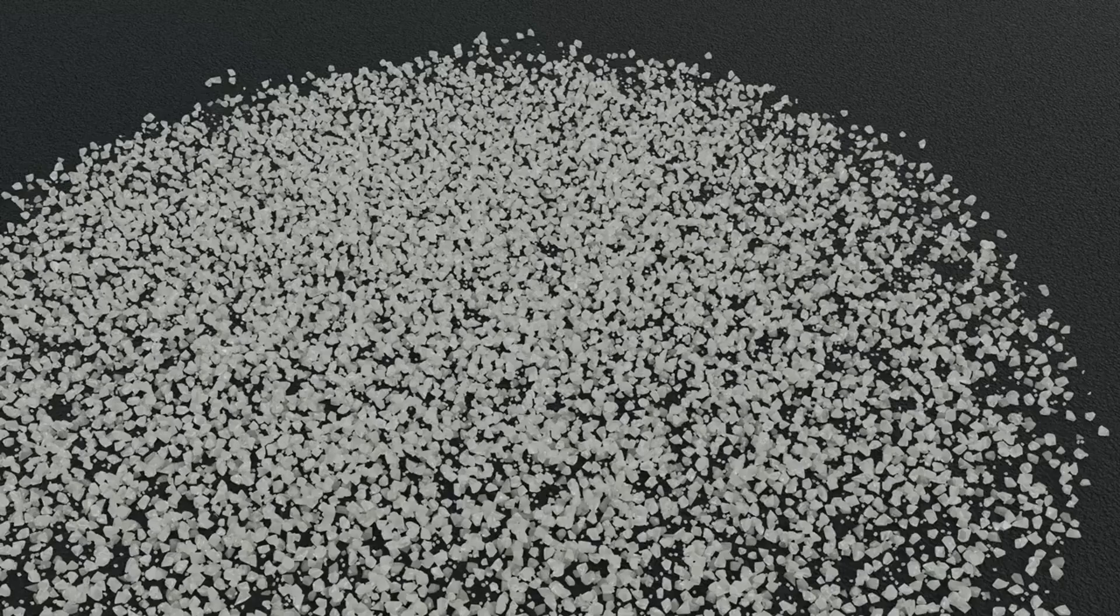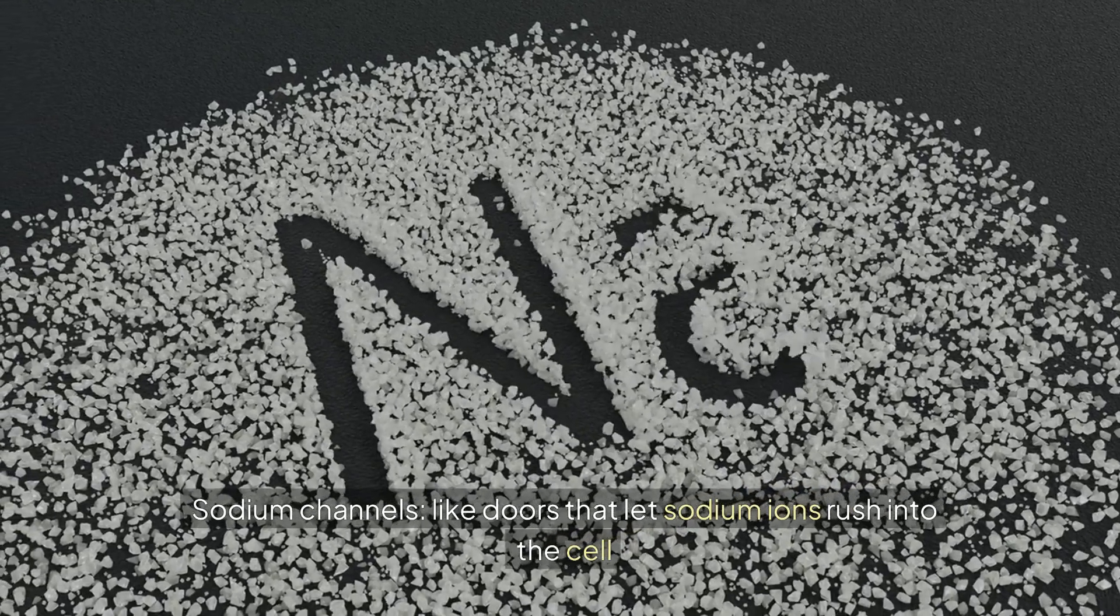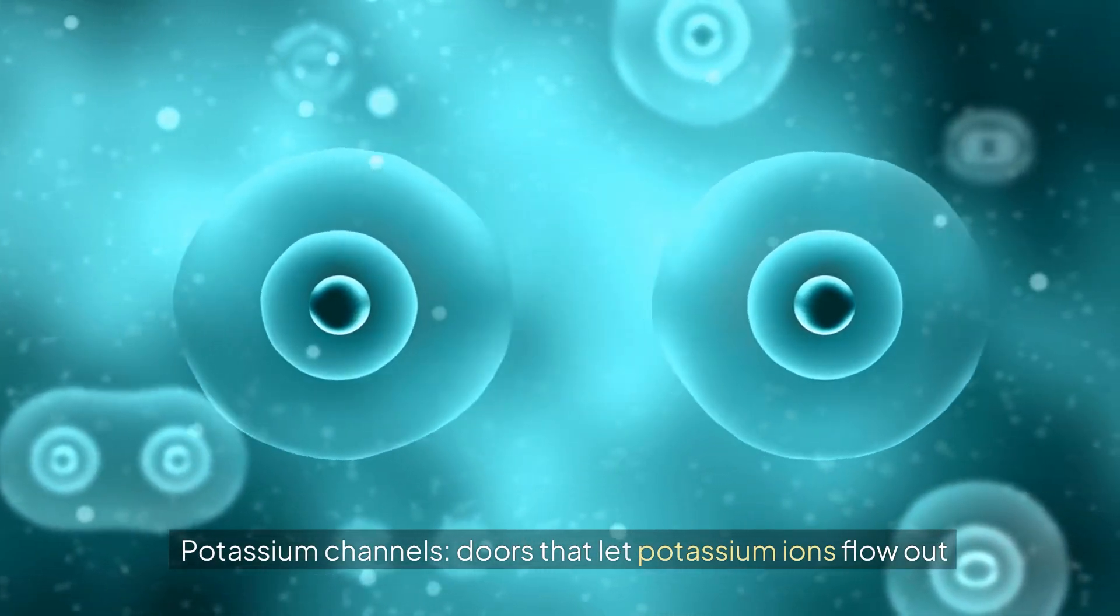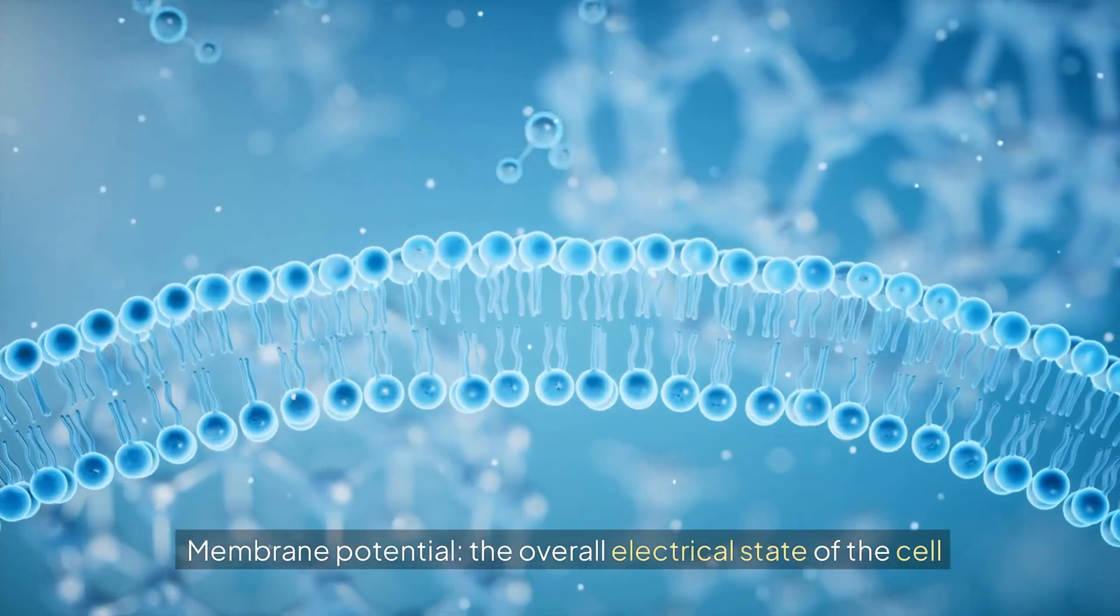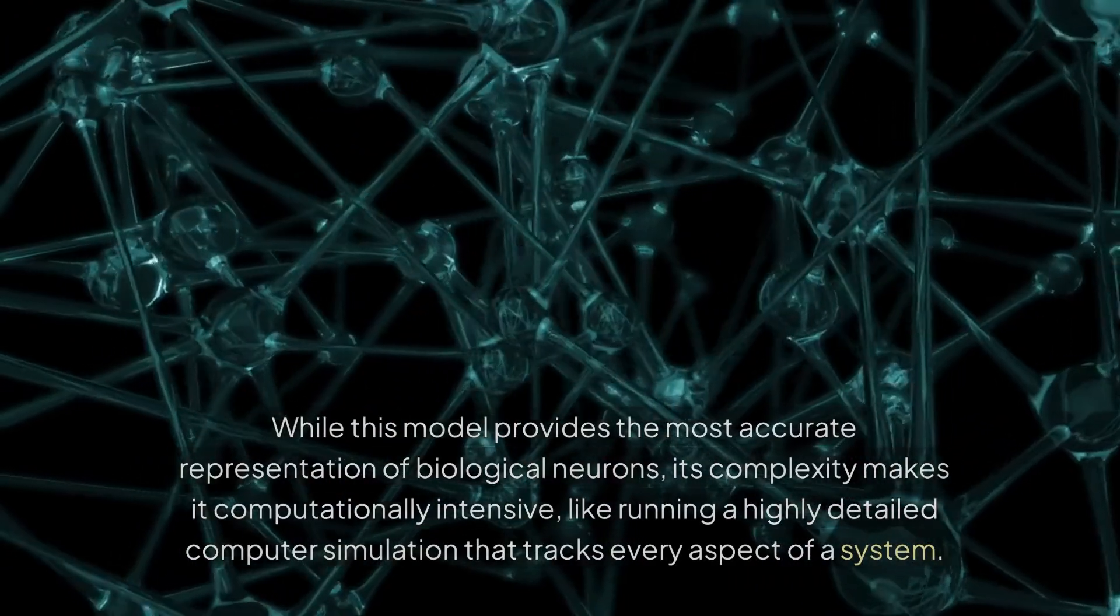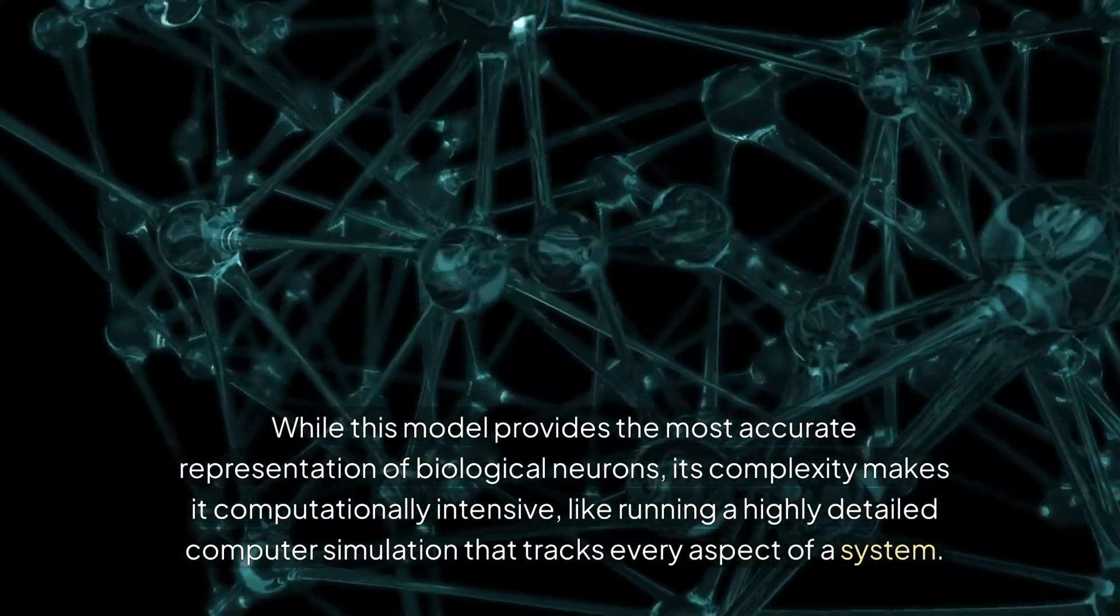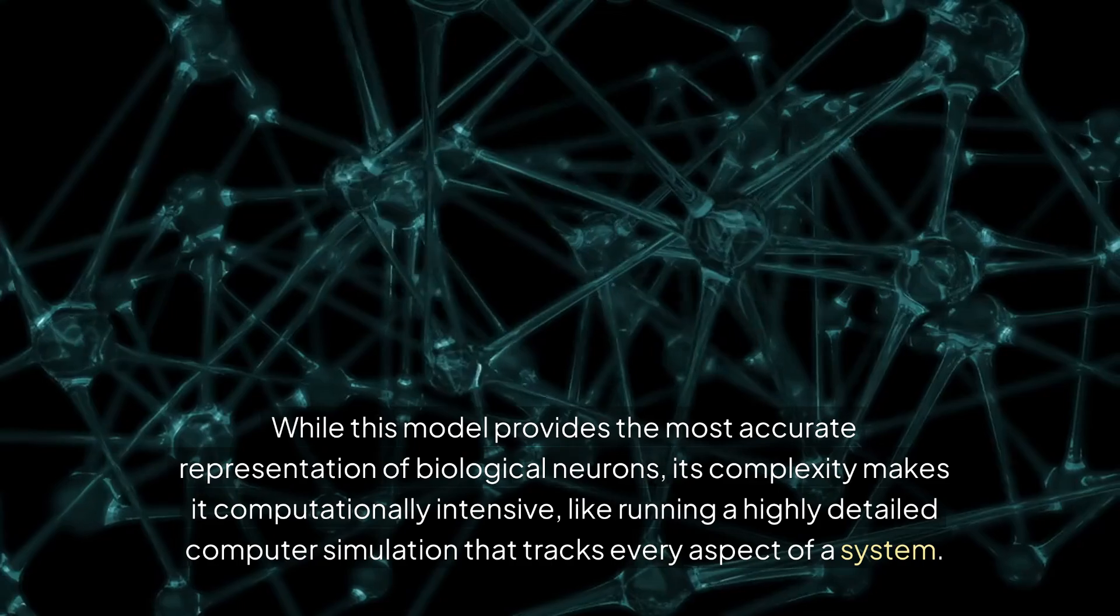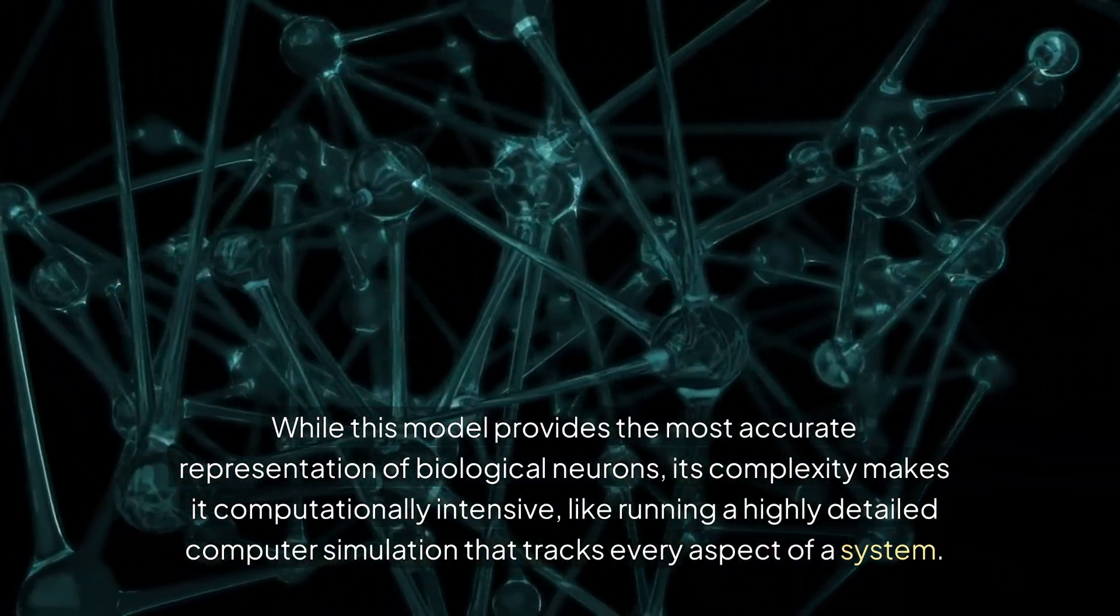Key components: sodium channels, like doors that let sodium ions rush into the cell; potassium channels, doors that let potassium ions flow out; leak channels, small passages that are always partially open; and membrane potential, the overall electrical state of the cell. Practical significance: While this model provides the most accurate representation of biological neurons, its complexity makes it computationally intensive, like running a highly detailed computer simulation that tracks every aspect of a system.